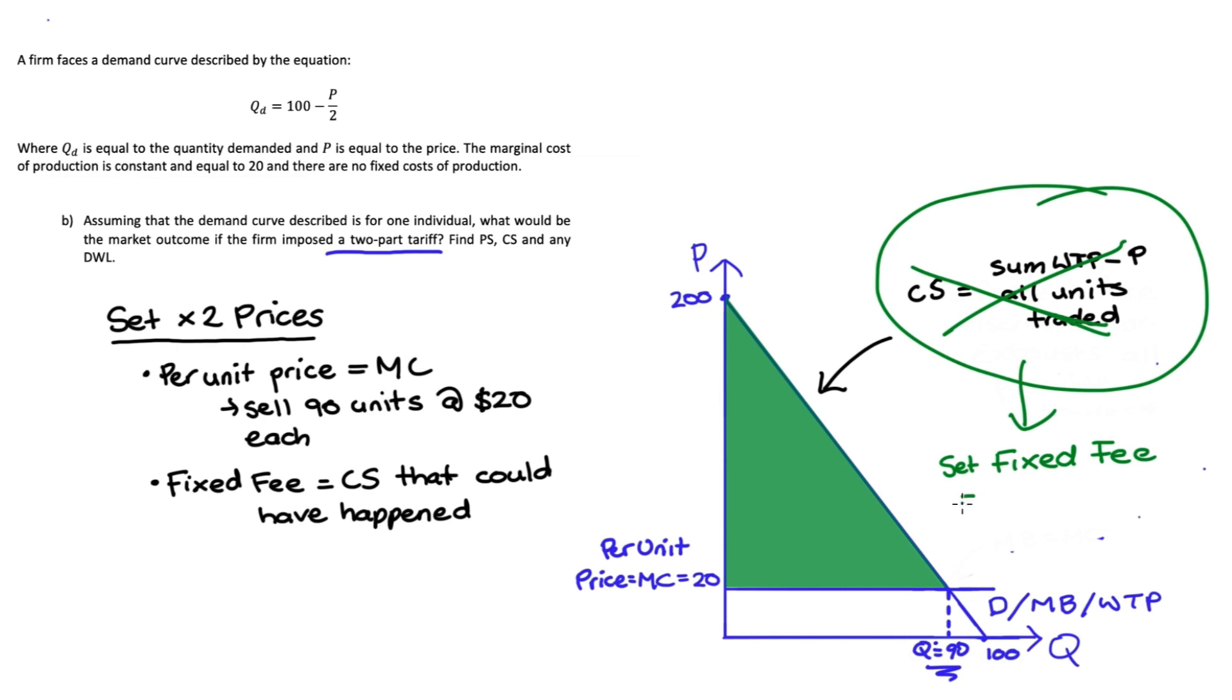In our question, the area of this triangle will just be half times base times height. The base is 90, and the height will be 200 (that's our price axis intercept, the top of our triangle) minus 20 (the bottom of our triangle), so 180. Half times 90 times 180 equals 8,100. So that's our two prices: our per unit price, $20 per unit, and our fixed fee, 8,100.